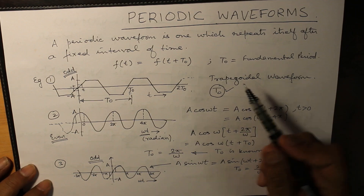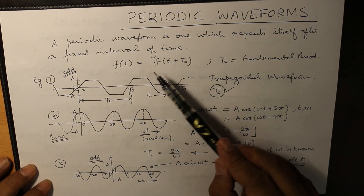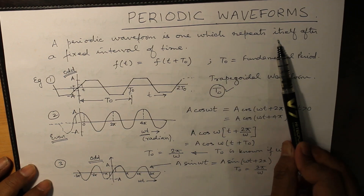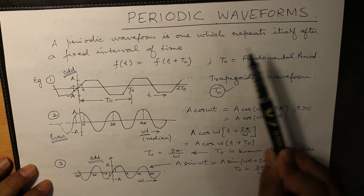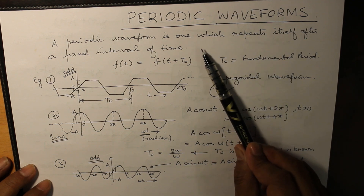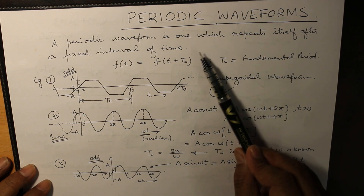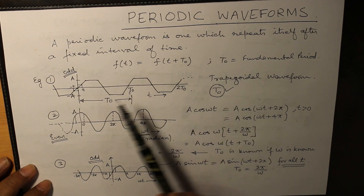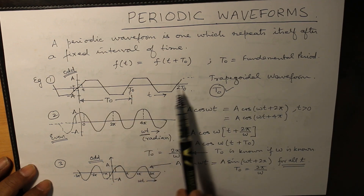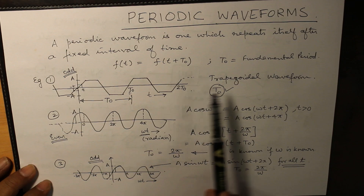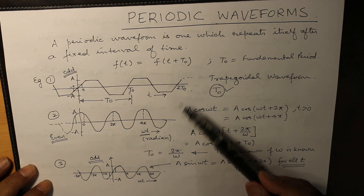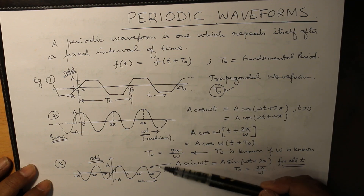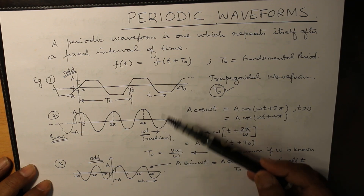So what have we learnt in periodic waveforms? A periodic waveform is one which repeats itself after a fixed interval of time. The minimum interval of time is the fundamental period t0. The waveform will repeat itself after 2t0 and so on. Sinusoidal waveforms are either even or odd.